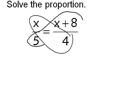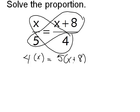Once you get really good at it, you don't have to do this. So I'm going to take 4 times x. So I have 4 times x equals 5 times x plus 8. Now I'm going to simplify. Well, 4 times x is just 4x.